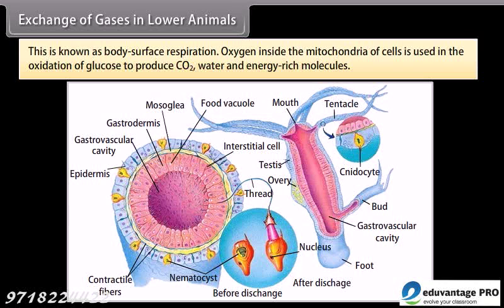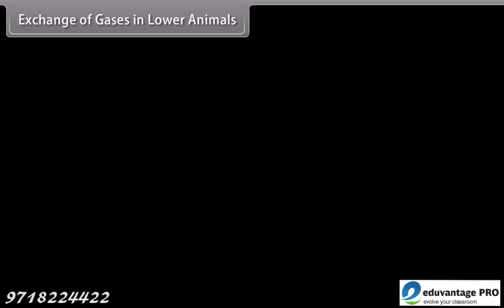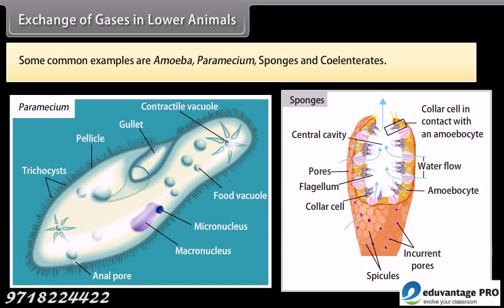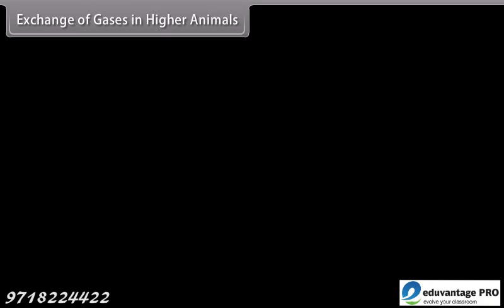Oxygen inside the mitochondria of cells is used in the oxidation of glucose to produce CO2, water, and energy-rich molecules. Some common examples of organisms using body surface respiration are amoeba, paramecium, sponges, and cnidarians.